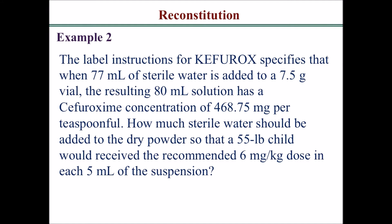Let's look at example 2. The label instructions specify that when 75 milliliters of sterile water is added to a 7.5 gram vial, the resulting 80 ml solution has a cefuroxime concentration of 468.75 milligrams per teaspoonful. How much sterile water would be added to the dry powder so that a 55 pound child would receive the recommended dose of 6 milligrams per kilogram in each 5 ml teaspoon?